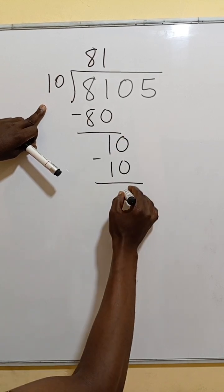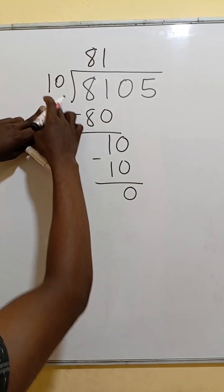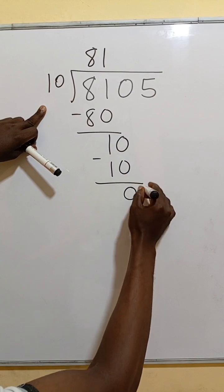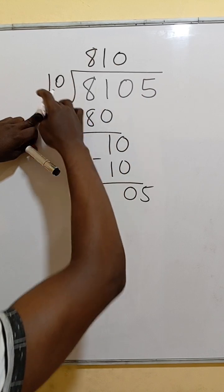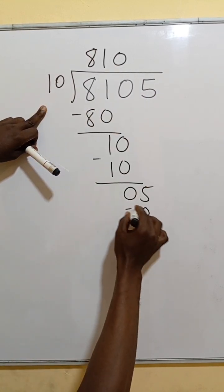When we take away, you get 0. 10 cannot go into 0, so we drop down 5. It will go into 5, 0 times. 0 times this will be 0.